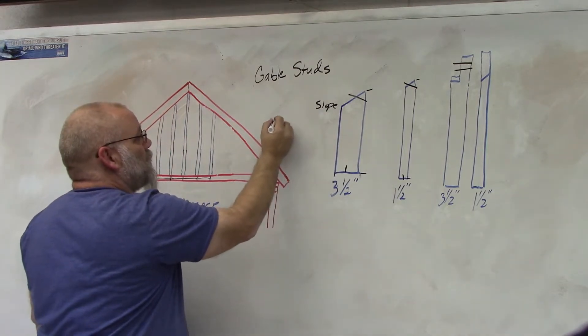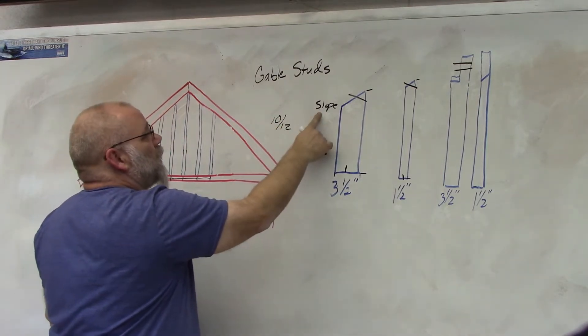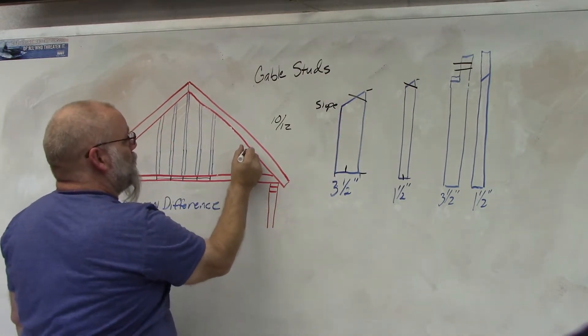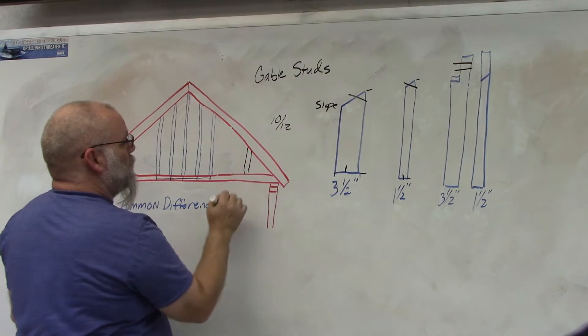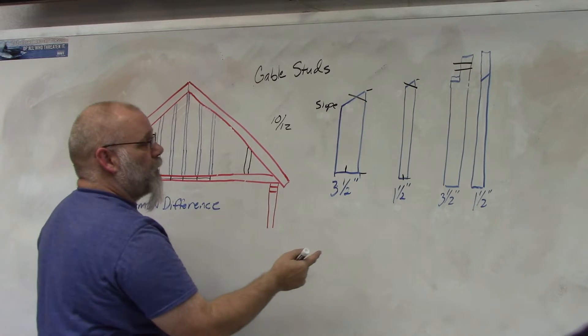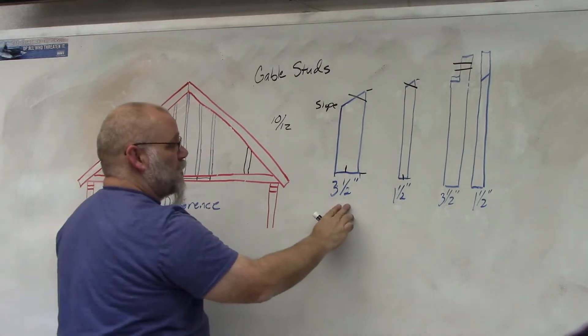So if the slope of the roof is a 10-12 then you cut that on a 10-12 and it would fit just like that. You can do it on either side. So that's the three and a half inch side.